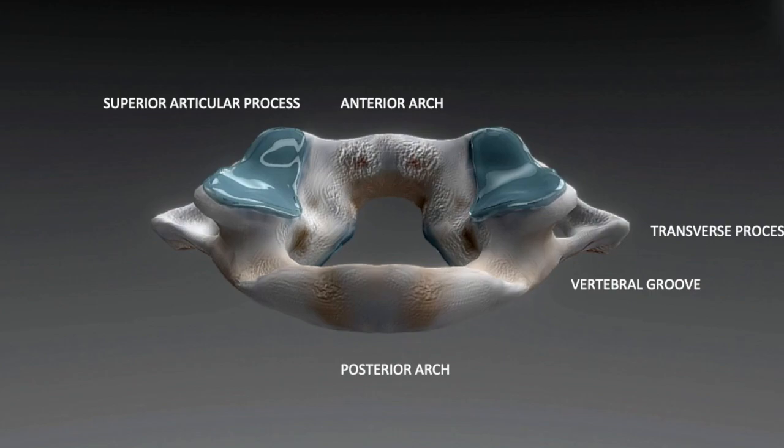The anterior one-fifth is formed by the anterior arch. What we see right now is the posterior surface of the anterior arch which has a groove for attachment with the odontoid process of the axis.